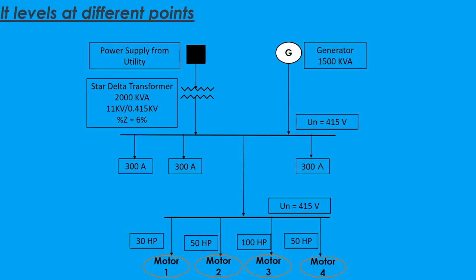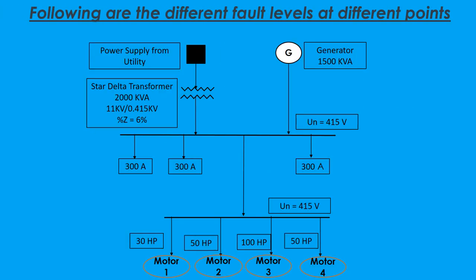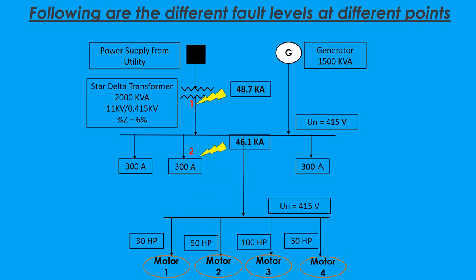Following are the different fault levels at different points: 48.7 kA at Point No.1, 46.1 kA at Point No.2, and 33.5 kA at Point No.3.